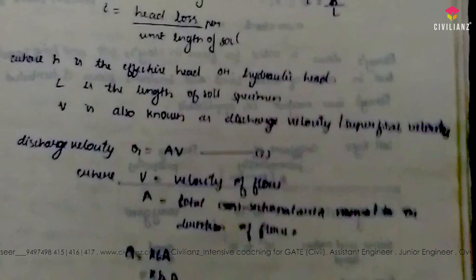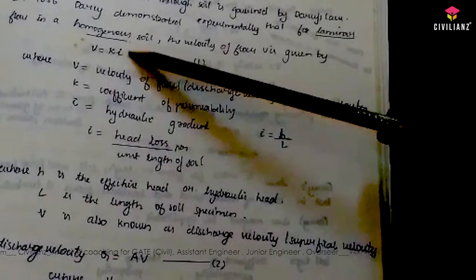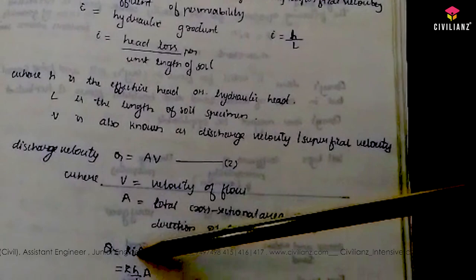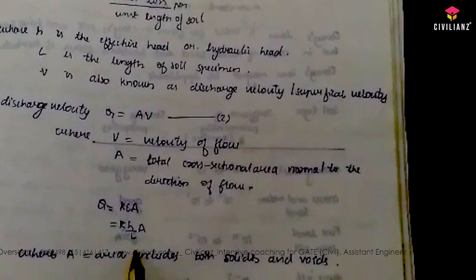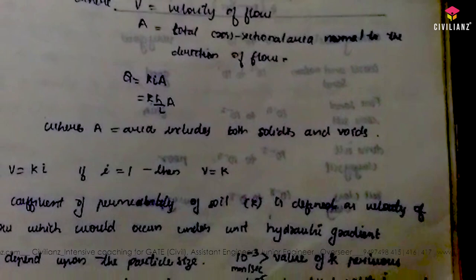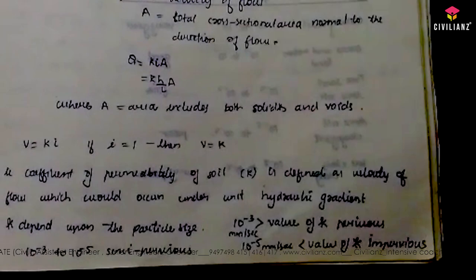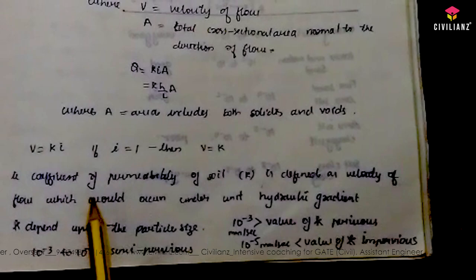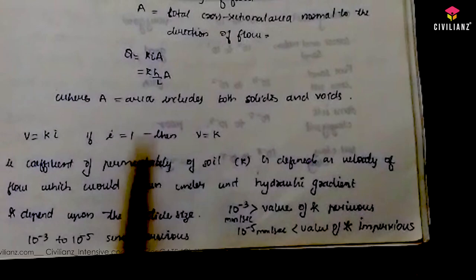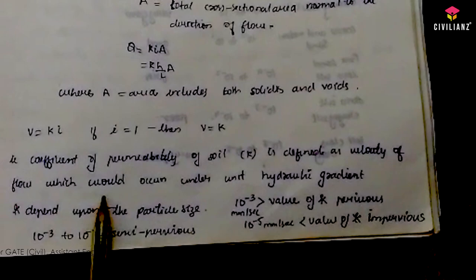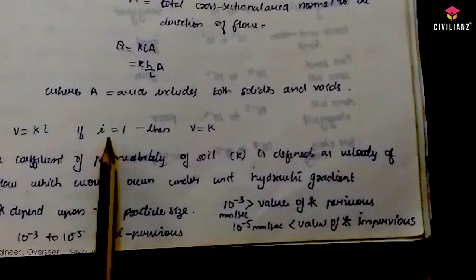The velocity of flow v equals ki, so the discharge q equals kiA.